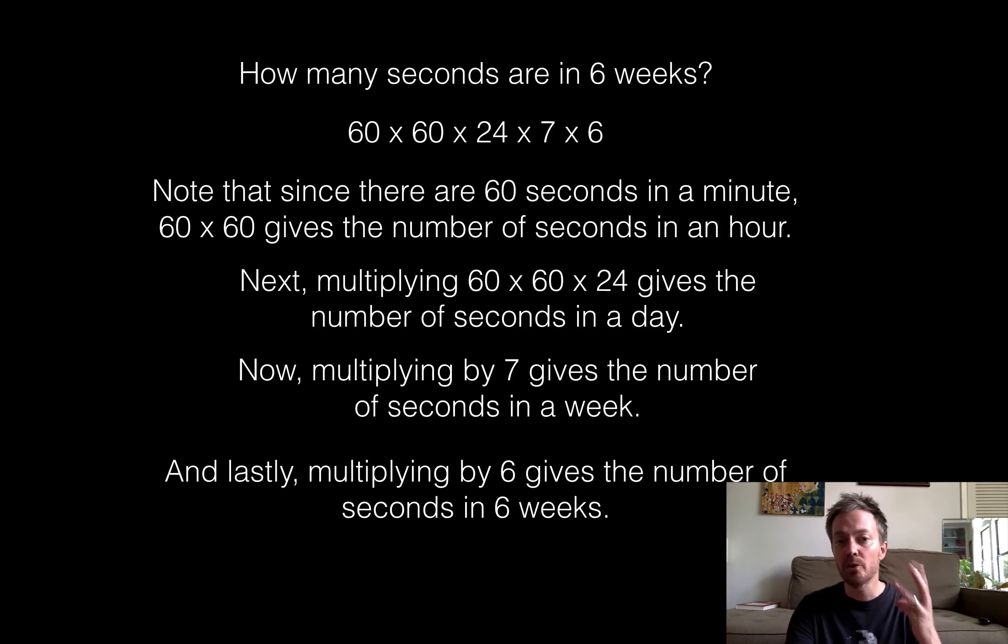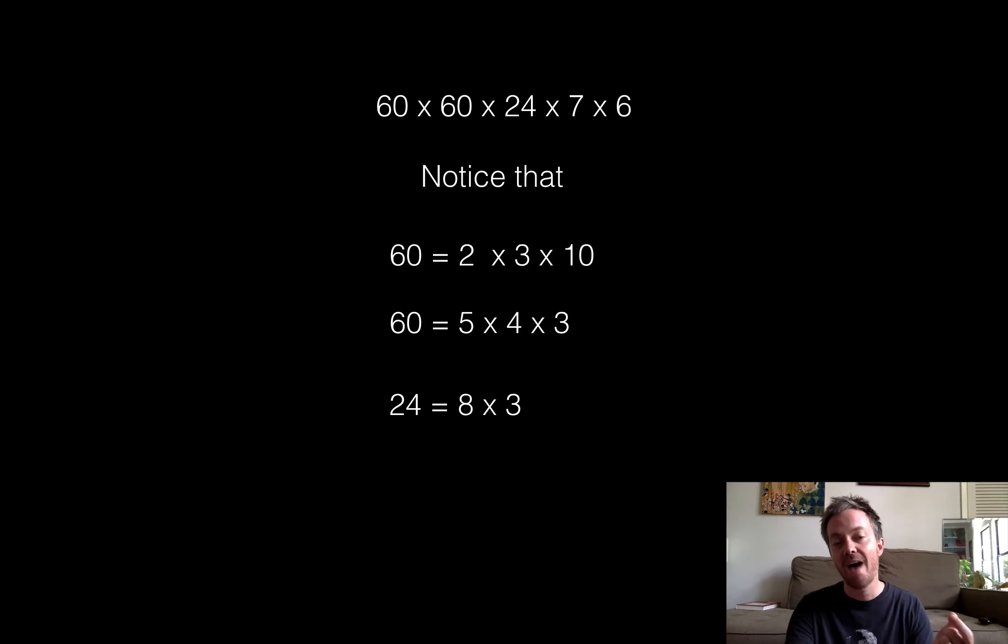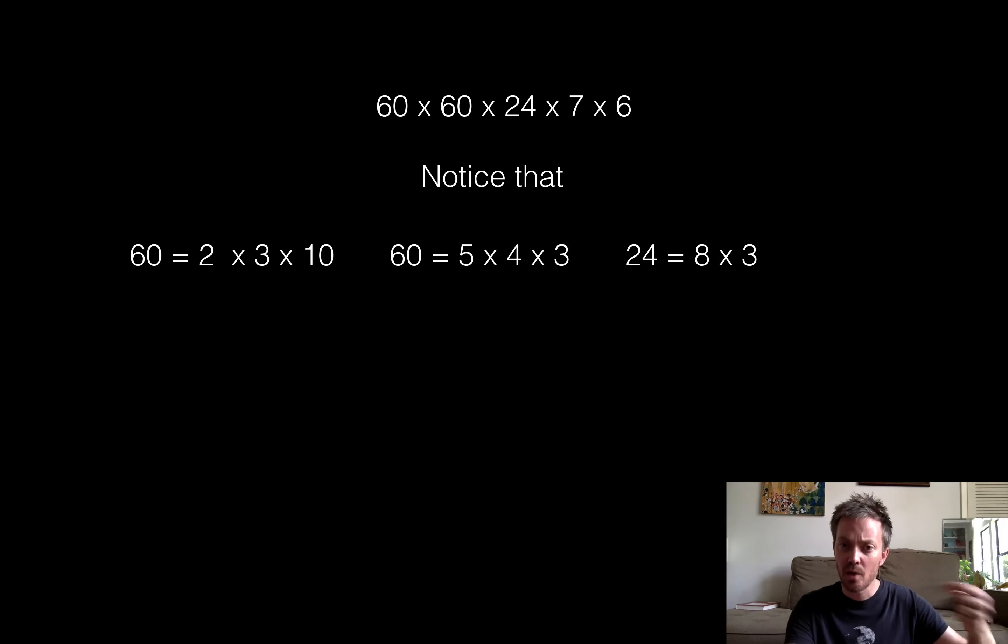Okay, so let's start with those first three numbers, 60, 60, and 24. And let's factor those. So the first 60, I'm going to factor that as 2 times 3 times 10. The second one I'm going to factor as 5 times 4 times 3. And the 24 I'm going to factor as 8 times 3. So I'm going to use those numbers. So I'm going to use the 7 times the 6 from the top row. And then I'm going to use all of those factors to come up with my 10 factorial. So let's see. There's a 10 coming from the 60. So I'm going to use that one. So we've now used that 10.